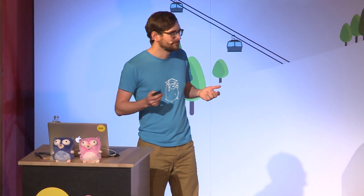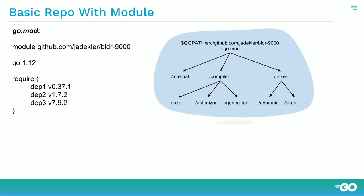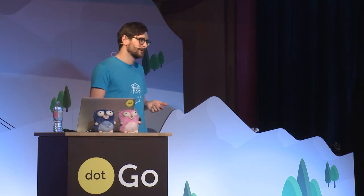How do we represent Builder 9000 as a module? Simply, if I have a go.mod at the root, it defines a module that contains all of these packages. So if someone depends on the module, they get the packages. The go.mod file is pretty simple: there's a module definition at the top, and the path is the name — very Go. Next, we have this go definition, which says I expect to be compiled with go 1.12. This is completely optional, but you'll get it when you run go mod init.